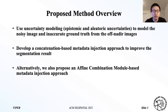In this paper, we propose to use uncertainty modeling to deal with the data noise. There are two types of uncertainty we can model: epistemic uncertainty, which models the uncertainty from model parameters, and aleatoric uncertainty, which models the noise inherited from observations. To further improve the result, we also designed two methods to explicitly inject the satellite image metadata into the model, as we describe later.